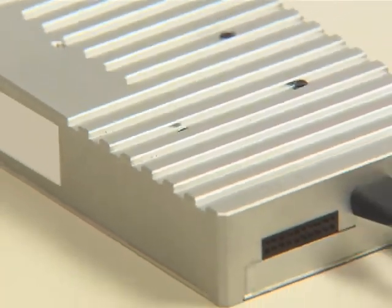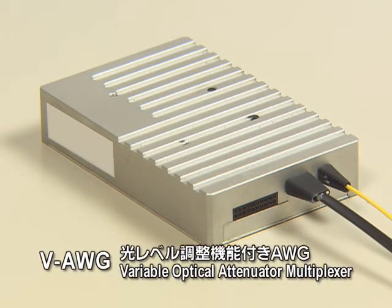The VAWG or Variable Optical Attenuator Multiplexer adjusts optical signal levels.